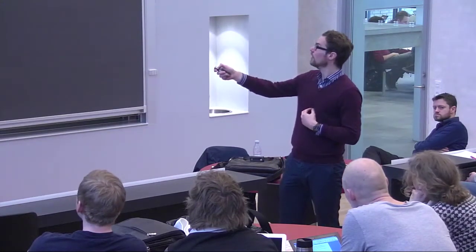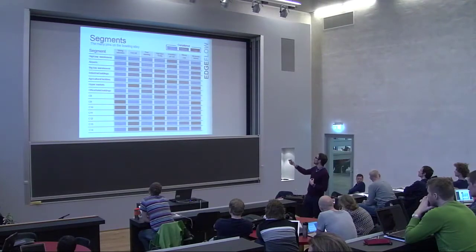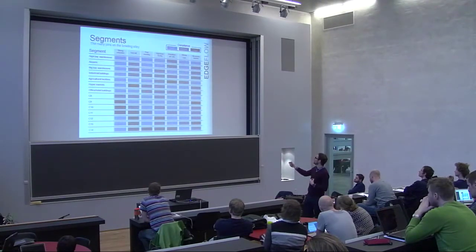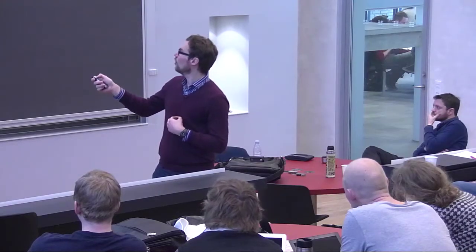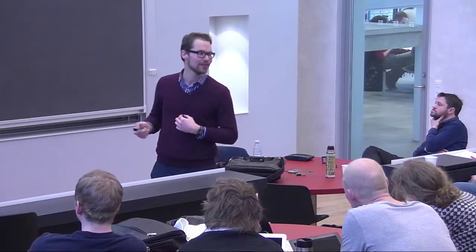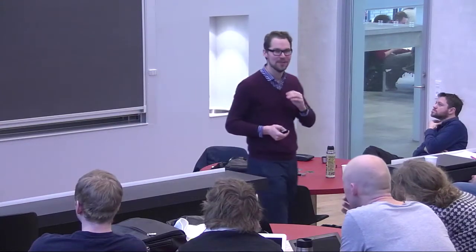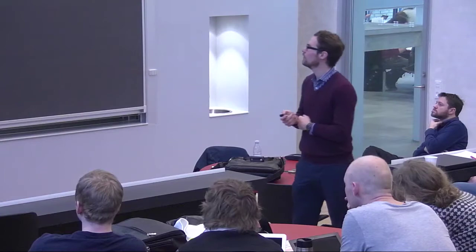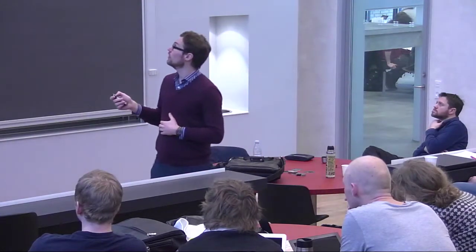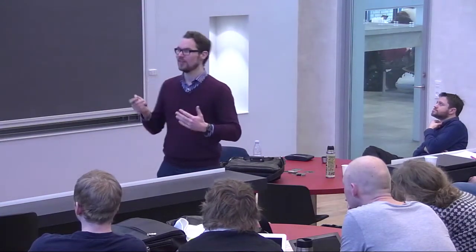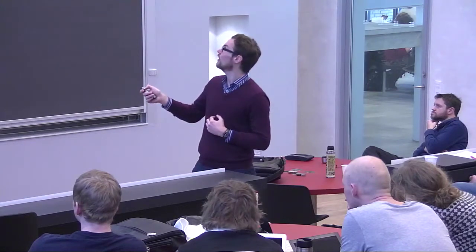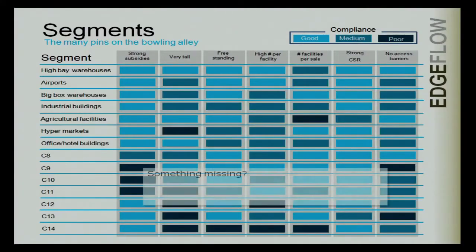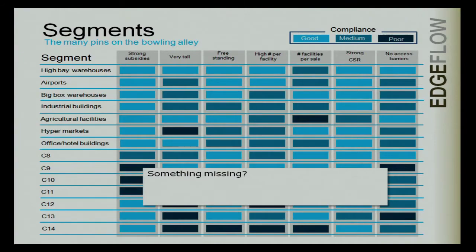What I've done is essentially listed my different segments and done a quick compliance measure ranging from poor to good compliance with the favorable characteristic. By doing that, I've rated all the segments. Some of them are a bit secret, so they've just been named C8 through 14. This enables me to find out where I should start. Incidentally, this is also a prioritized list — in this case, high bay warehouses is actually the one we'll be starting with.